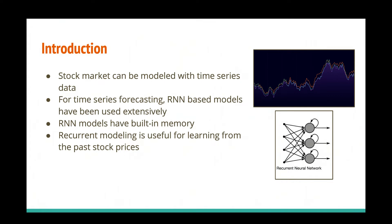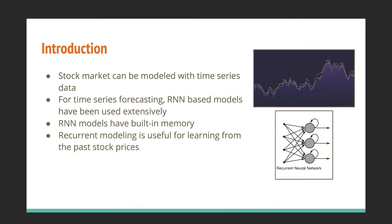For time series forecasting, RNN-based models have been used extensively. RNN is very useful for time series prediction because they have recurrent links in their network design. It kind of unfolds so we can go back a few steps, making it work like a memory mechanism. In the picture, you can see time t, t minus one, and t minus two. Based on this, we can say that RNN models have built-in memory, which is useful for learning from past stock prices for robust and better future prediction.